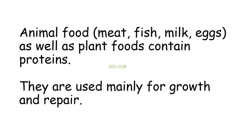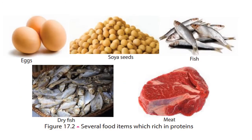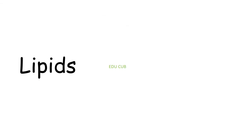The next nutrient type is proteins. Animal foods like meat, fish, milk, and eggs, as well as plant foods, contain proteins. They are used mainly for growth and repair. Foods rich in proteins include eggs, soya seeds, fish, dry fish, meat, winged beans, gram, milk, dal, and mushroom.